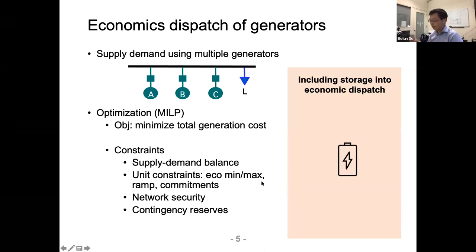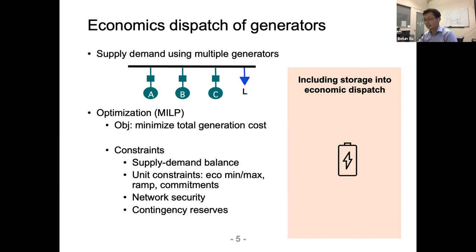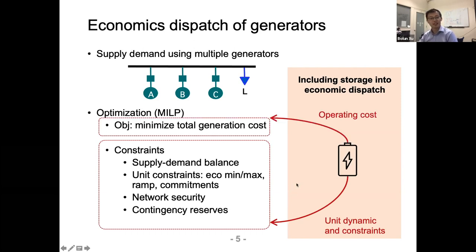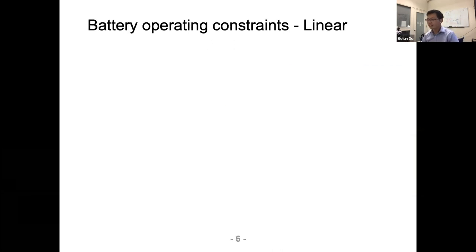Now, how do we include battery into this framework? At a high level the solution is intuitive: add battery into the constraints and add battery operating costs into the objective function. But in detail this may not be so trivial.